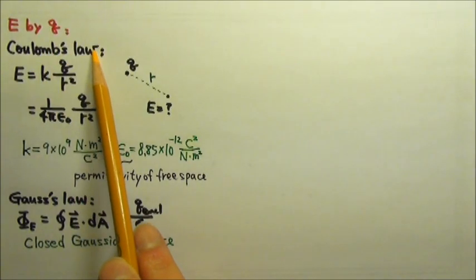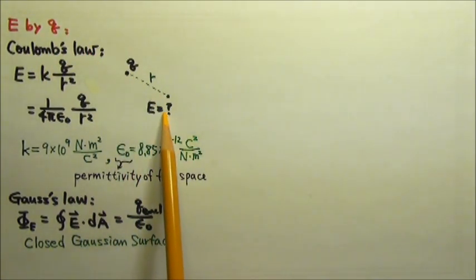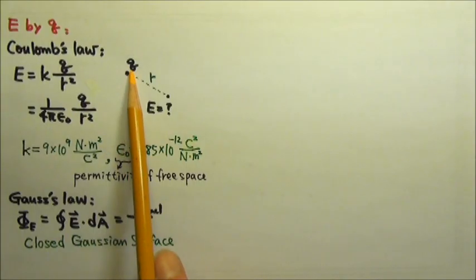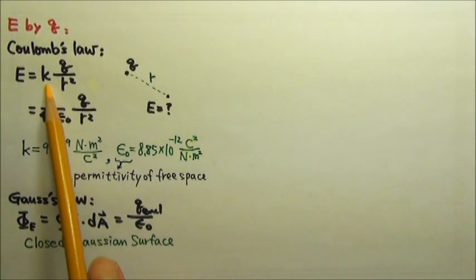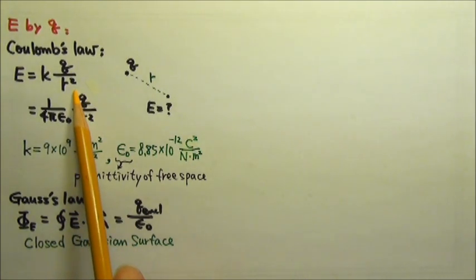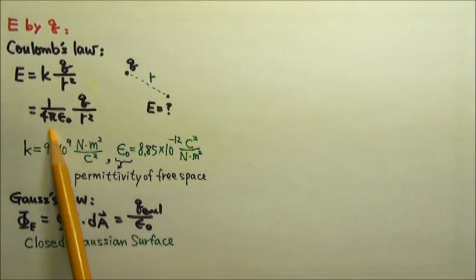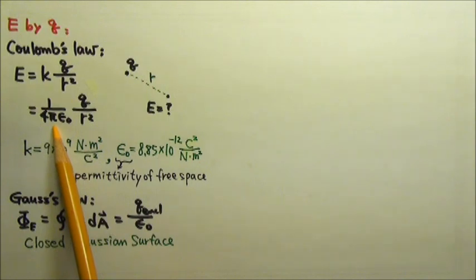Coulomb's law can be used to find the electric field produced by a point charge a distance r away. The electric field equals k times q over r squared, where k is also 1 over 4 pi epsilon naught.